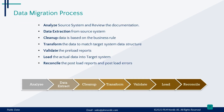The data migration process begins with analyzing the source system. This entails gaining a comprehensive understanding of the source system's intricacies and reviewing any existing documentation. This step forms the bedrock for a smooth migration, ensuring we're well-versed with the data structure and essence. Next comes data extraction, where we employ suitable methods and tools to extract data from the source system. This might involve diving into databases, files, or applications to retrieve the relevant data earmarked for migration.